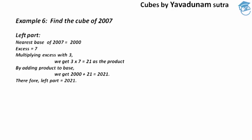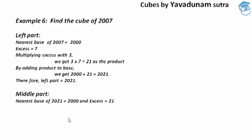After finding the required left part, moving to the next part of procedure — the middle part. The first step is to take the left part answer 2021 and find its nearest base and excess. The nearest base to 2021 is 2000, and the excess is 21, found by comparing 2021 with 2000.